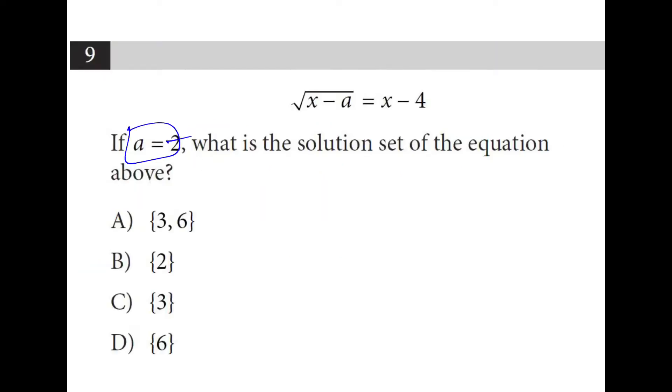a is 2, so I can plug that in and then square both sides. On the left, I'm left with x minus 2. On the right, I have x squared minus 8x plus 16. If I try to solve for 0, this is minus 9x now because I moved 1x over, and this is plus 18 because I moved the 2 over.